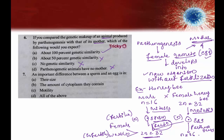Without fertilization, the egg undergoes parthenogenesis and produces haploid individuals — these are the males with 16 chromosomes. They come directly from the female (mother). Therefore, the genetic constitution of the parthenogenetically produced individual is 100% similar to its mother, because the organism is produced from the female gamete without fertilization. The answer is option A.